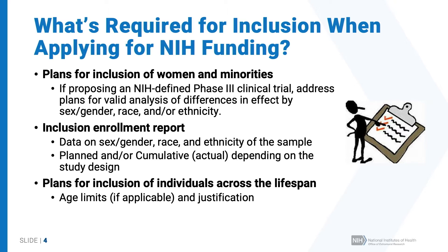In addition, you'll need to provide an inclusion enrollment report — a table that provides data on sex or gender, race, and ethnicity of the sample. You may be providing either planned or cumulative enrollment, depending on the study design. You'll also need to include plans for inclusion of individuals across the lifespan, provide age limits if applicable, and a justification for any age limits in your research.